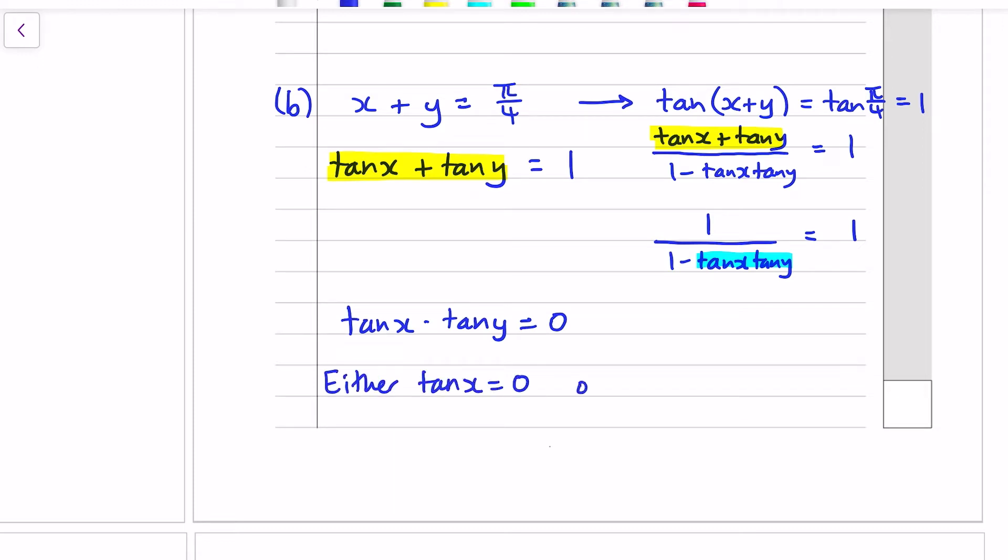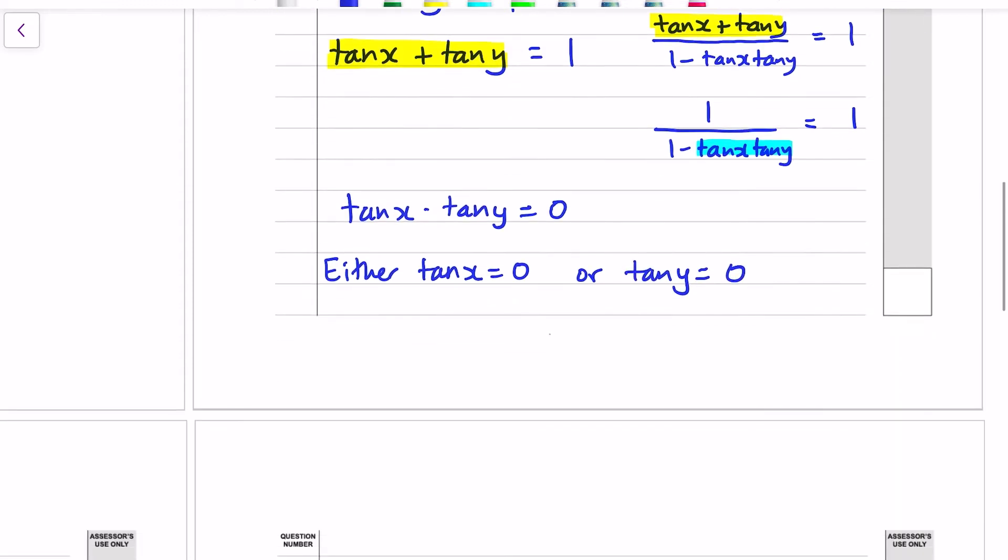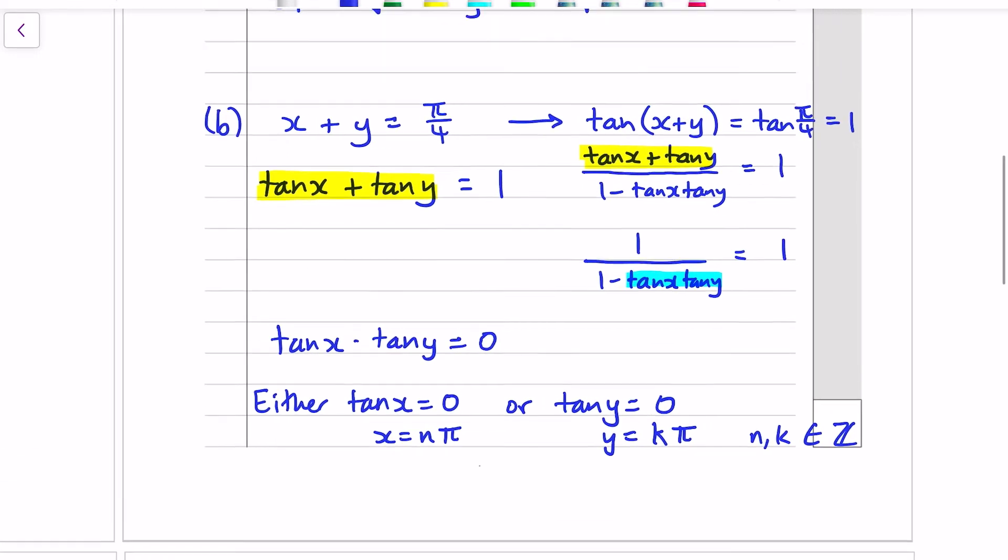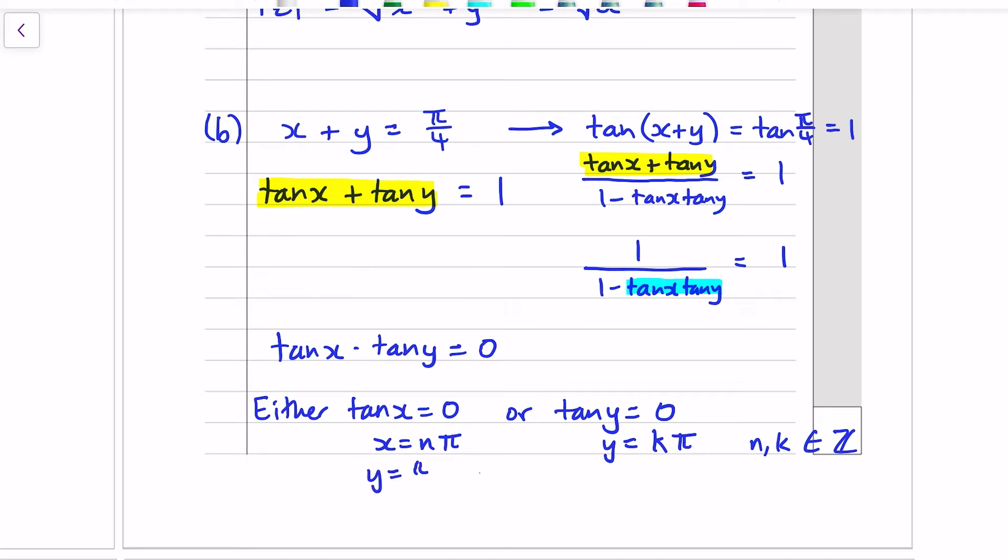Either tan x equals 0 or tan y equals 0. tan x equals 0 at an infinite number of positions. x is equal to n times pi, where n is an integer. Or y is equal to n times pi. Or we'll use a different letter, k pi. n and k belong to the integers. Z is the letter for integers. If x is equal to n pi, we know that the solutions have to add to pi over 4. If they have to add to pi over 4, then y would have to be pi over 4 minus n pi, in this case. Or in the other possibility, when y is k pi, x would have to be equal to pi over 4 minus k pi. You get slightly different solutions if you approach the problem in a slightly different way, but the key thing to note there is there's an infinite number of solutions. 0 pi over 4 is one particular solution.